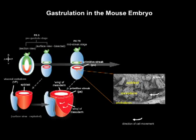Prior to the initiation of gastrulation, the mouse embryo comprises a bilaminar, cup-shaped structure consisting of visceral endoderm, shown here in blue, which encapsulates the extraembryonic ectoderm, shown here in green, proximally, and the pluripotent epiblast, distally, shown here in red.